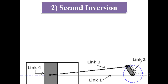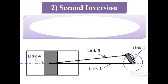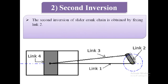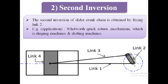Second inversion: the second inversion of slider crank chain is obtained by fixing link 2. As shown in the image, link 2 is fixed. Examples or applications are the Whitworth quick return mechanism, which is used in shaping machines and slotting machines.